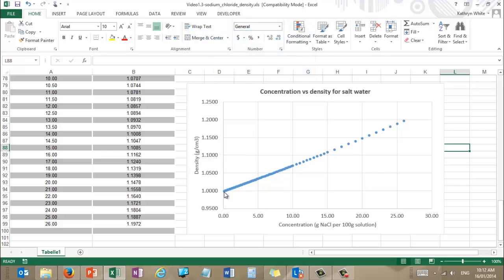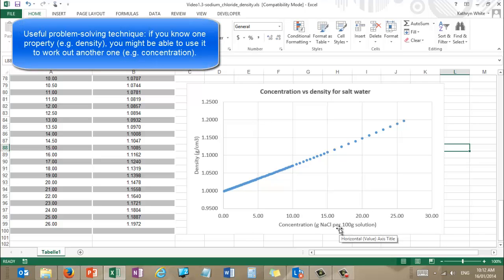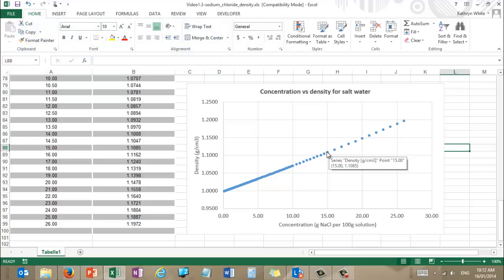Now, if you've got a nice predictable relationship like this, then if you know the density of a mixture, you can work out what its concentration is. And this is a technique that's quite frequently used for determining concentrations, is to, if you know the ingredients of your mixture, you can determine its density, and from that you can work out its concentration.